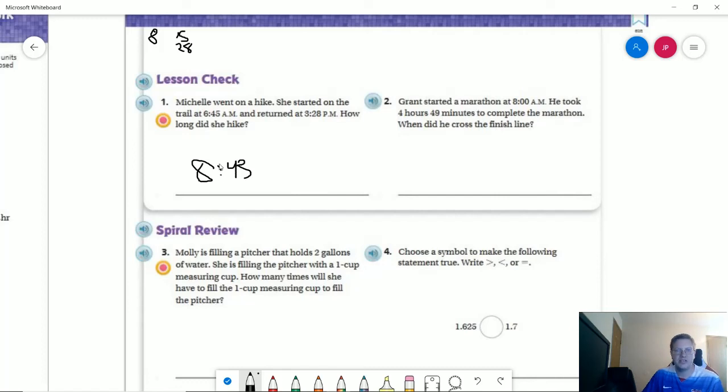And that should be an H. So eight hours, 43 minutes. If we are doing it that way, if you wanted to do the number of minutes, we would do something slightly different. So number two on the back, we've got 8 AM for the start time. Four hours takes us exactly to noon, 49 minutes after that would be 12:49 PM.